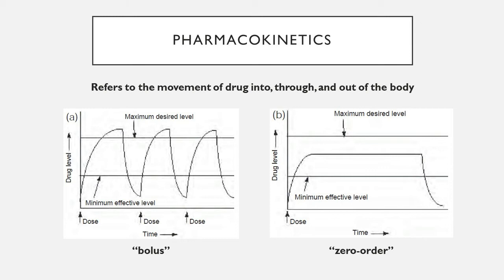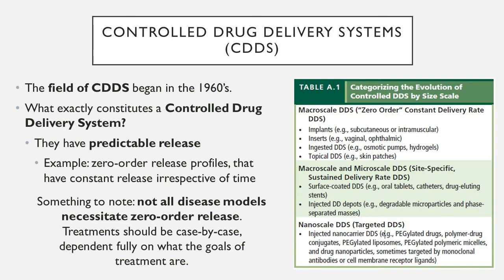These different concentration profiles bring in the concept of controlled drug delivery systems, a field that got its start in the 1960s with polymer and silicone-based systems. The textbook defines controlled drug delivery specifically as zero-order release systems, though in literature it more broadly refers to anything with predictable release — zero-order or first-order profiles are both valid examples. Not all disease models necessitate zero-order release, despite it being the gold standard.